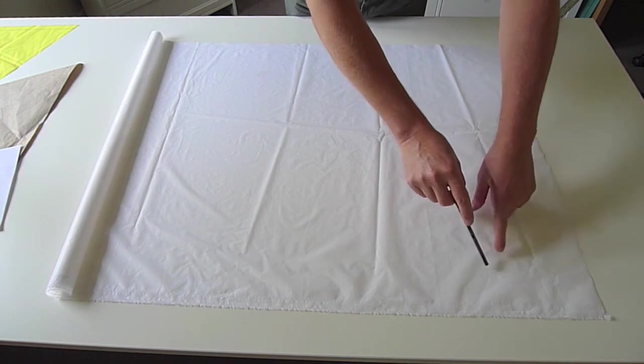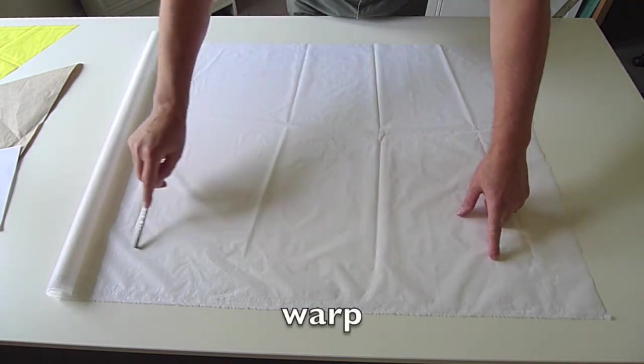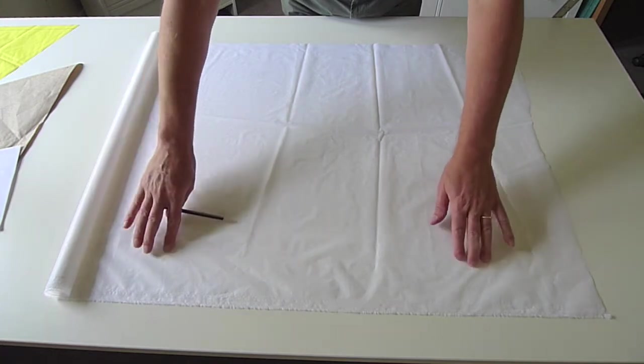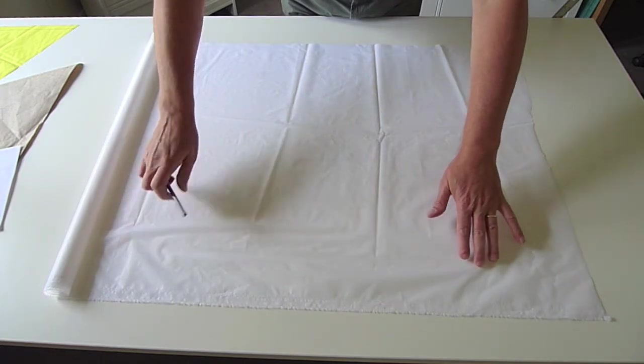When you're cutting out kite panels it's best to have the outer edge of the kite parallel to the warp fibers which run down the roll and have the least stretch.